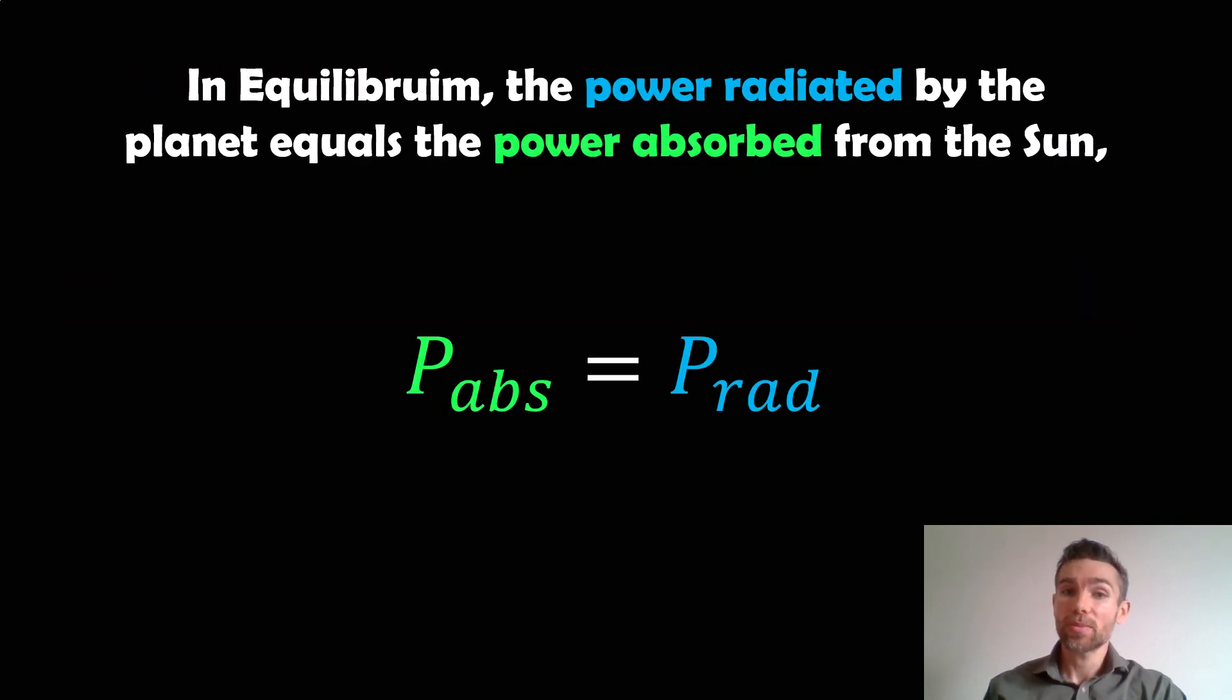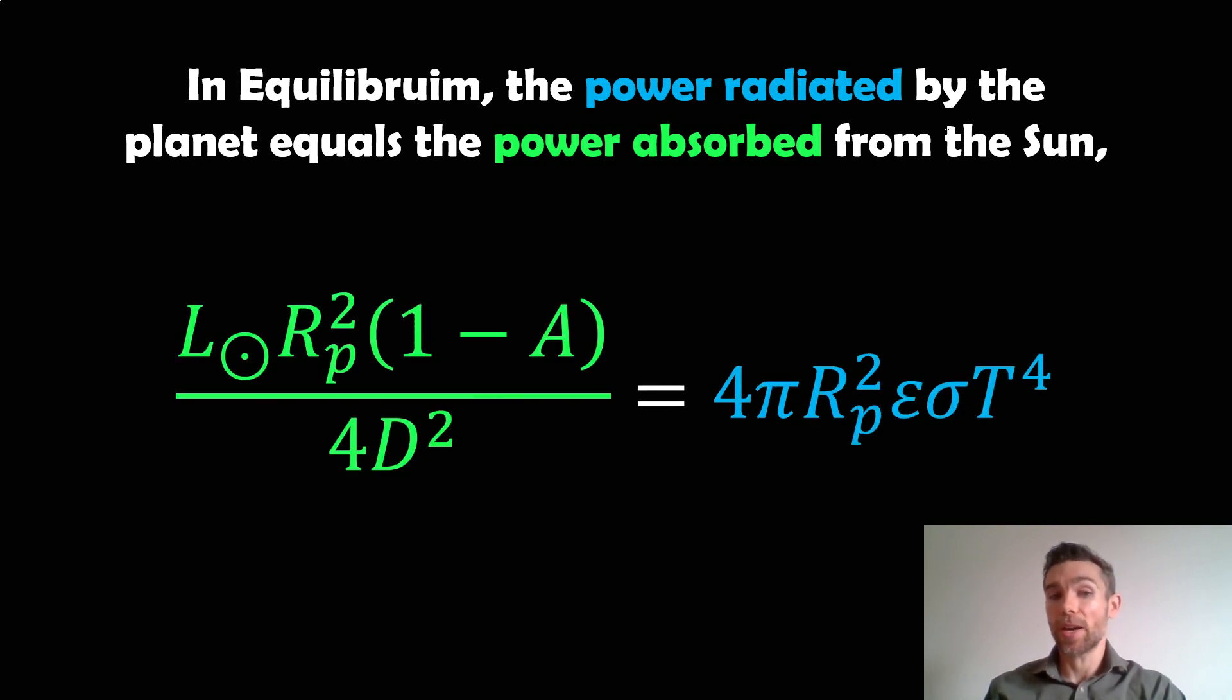If it's in equilibrium, that means it's balanced—the absorbed power is balancing the power being radiated away. You can equate those two equations. The power absorbed equals the power radiated. We can put our equations in and balance them. We had on the left side the power absorbed by the planet, and on the right side the power radiated. Now you should see we've got T, the temperature there. If we rearrange for T,